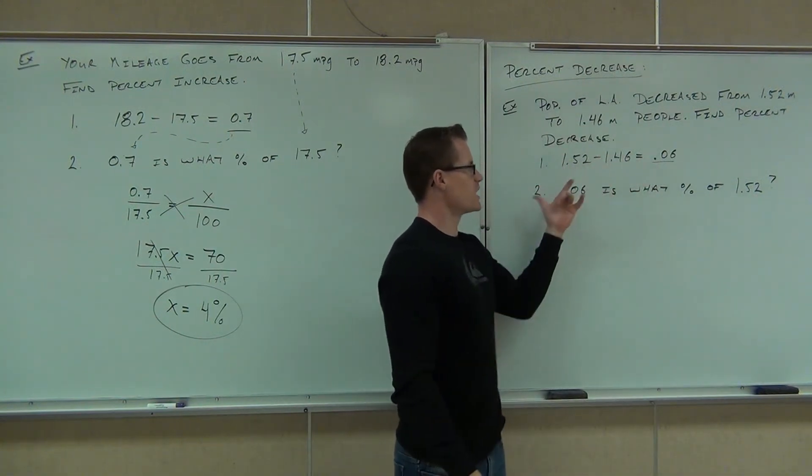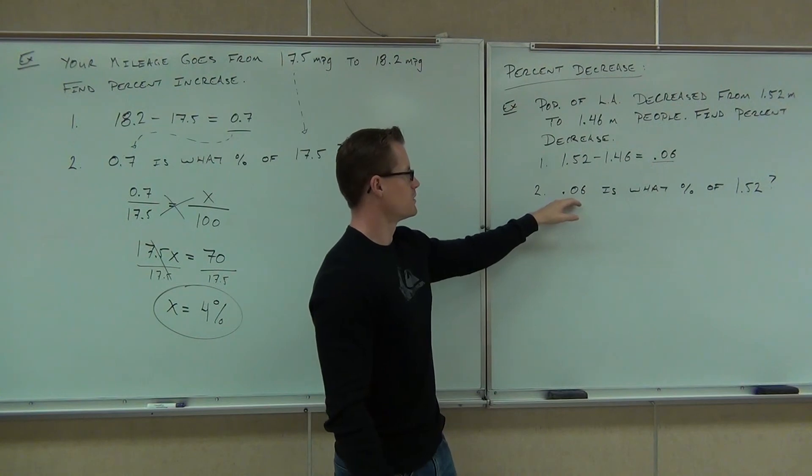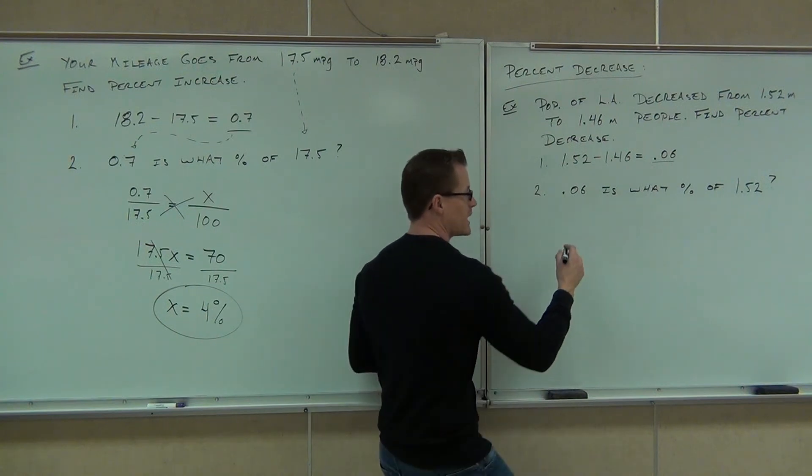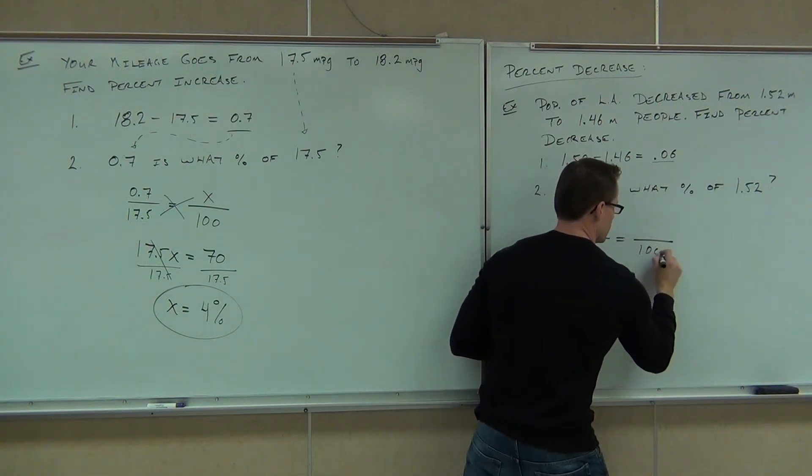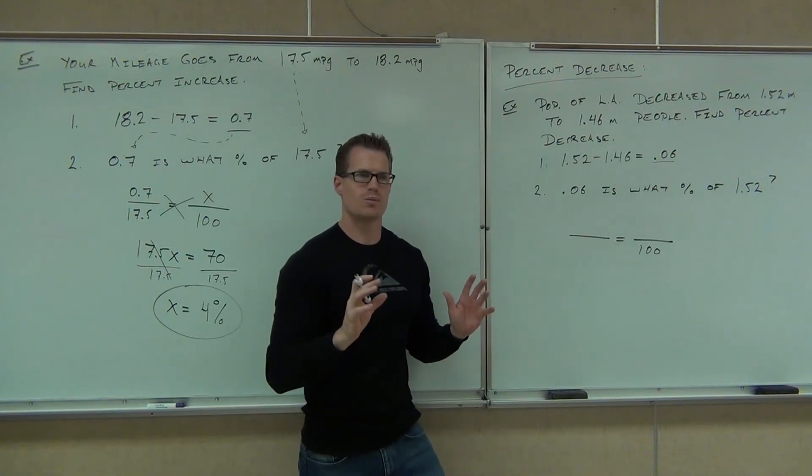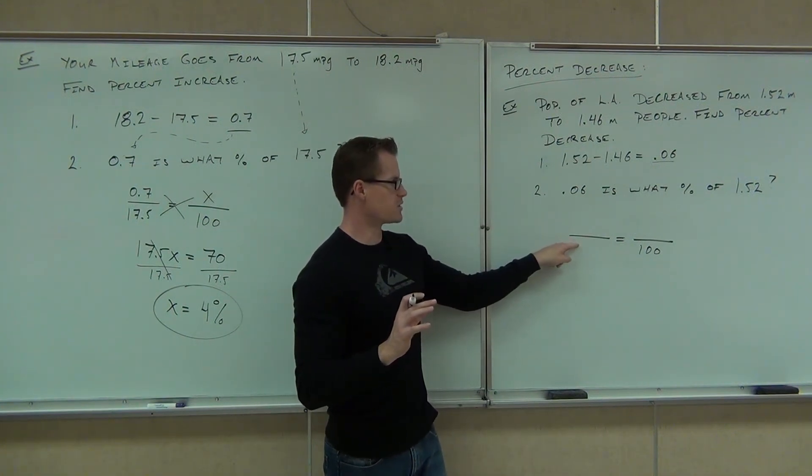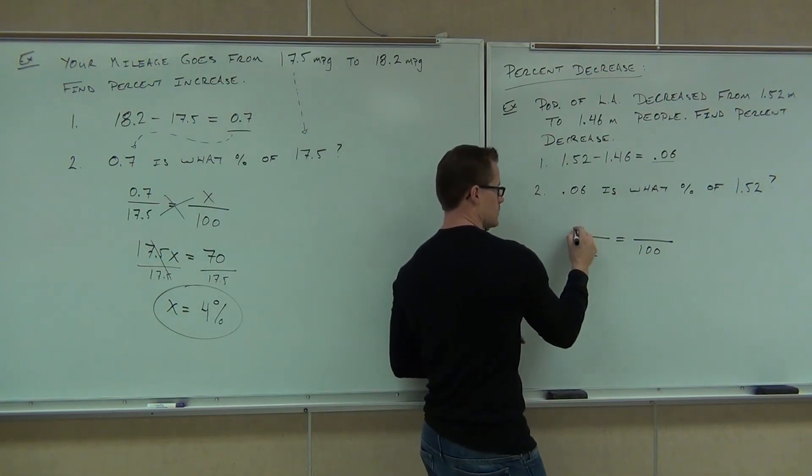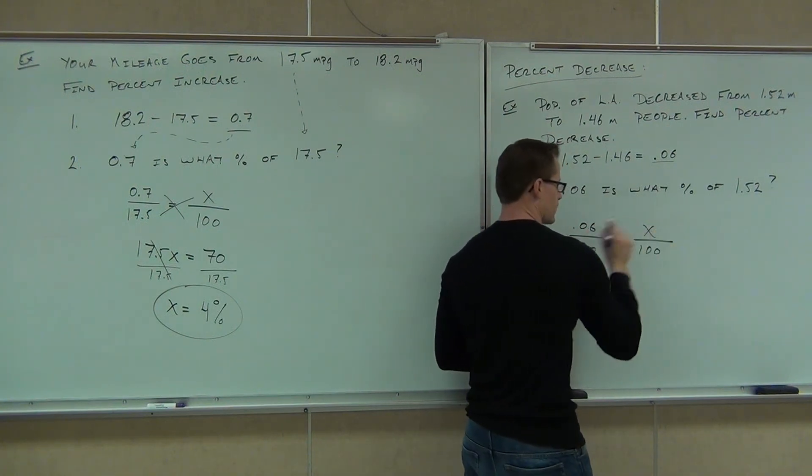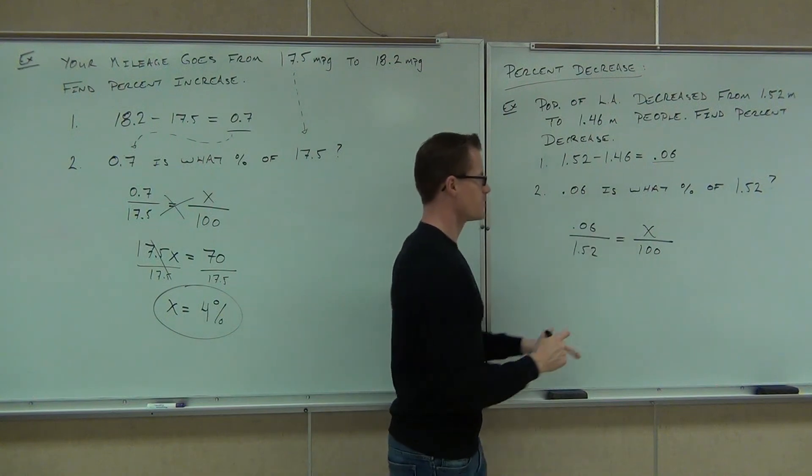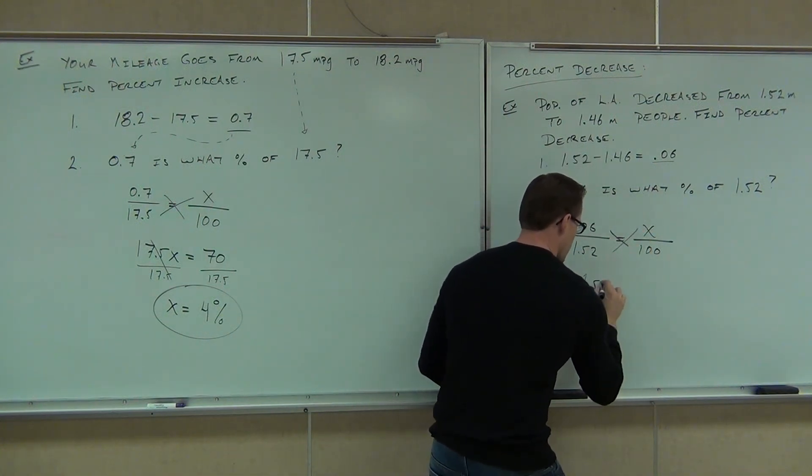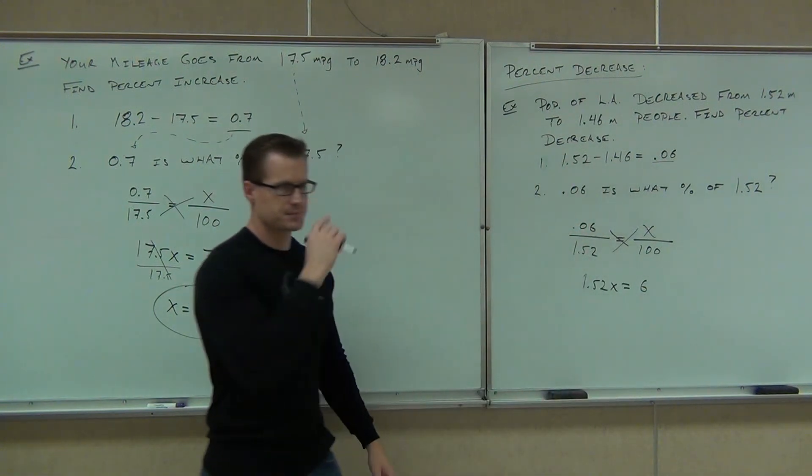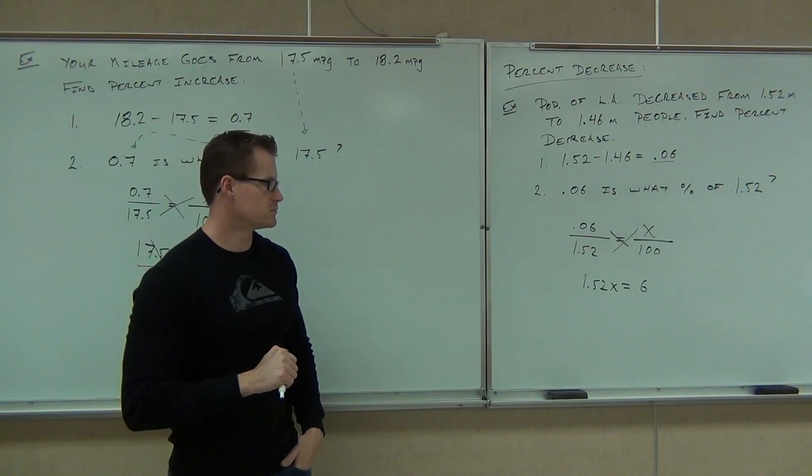So, difference? Sure. Set up your percent equation. 0.06 is what percent of 1.52. That's what you started with. And then, we can go ahead and make up our percent equation here and solve it. So, help me out on this one, ladies and gentlemen. What number goes right here, please? 1.52. Good. How about here? 0.06. And here? Very good. That's it. Is over of equals percent over 100. Of course, we can cross multiply. We'll get 1.52x equals 6.